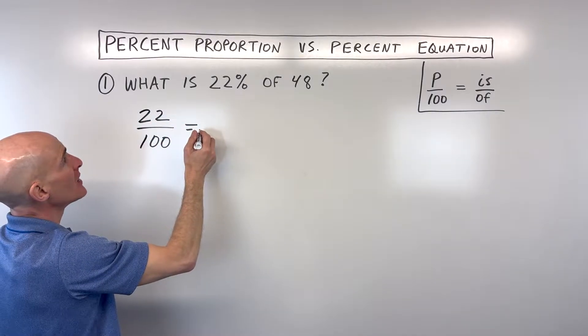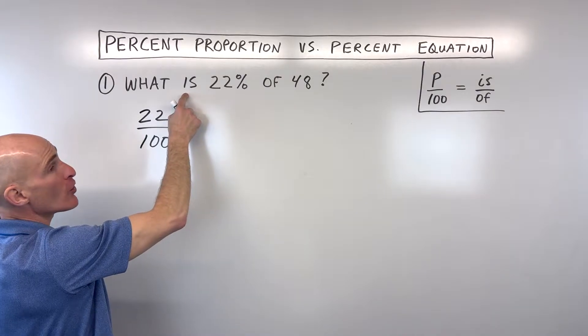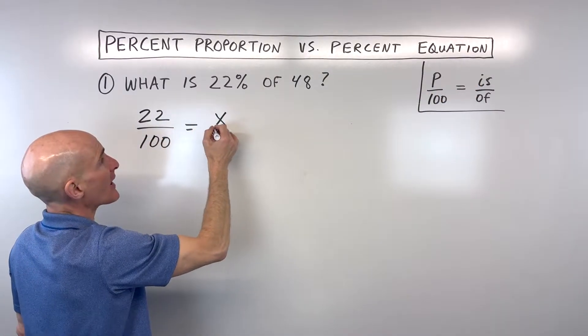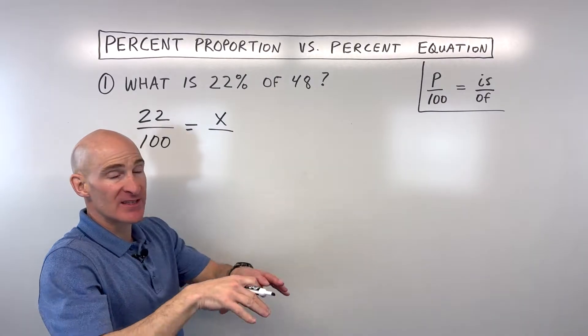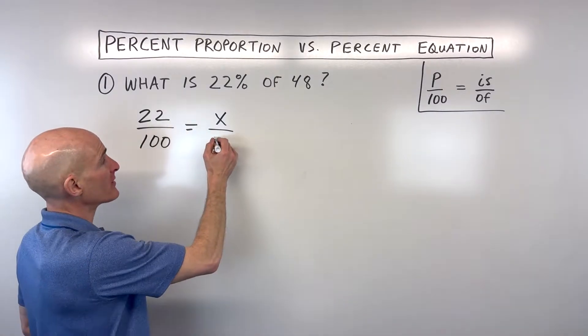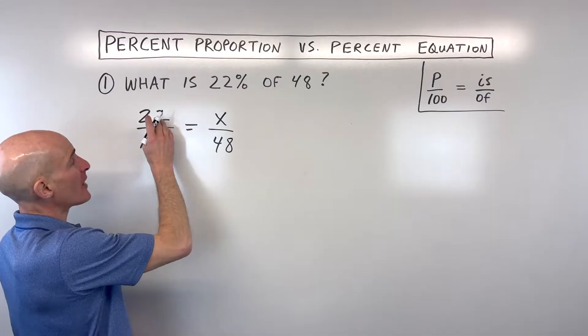Equals what is, we don't know, so we're going to make that a variable x. But 'of 48' means it's out of 48, that's the whole thing, the total. So now we've got our proportion, we're going to cross multiply.